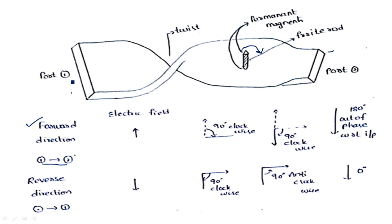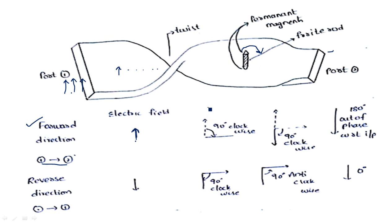We take the electric field component which is perpendicular to the direction of propagation — it may be either in the upward or downward direction. Here I have taken the upward direction as the input electric field. When this upward direction signal enters into the twist, the twist provides a 90 degrees phase shift — the wave slowly turns because of the twist, giving a 90 degrees phase shift.